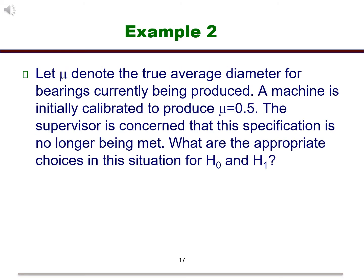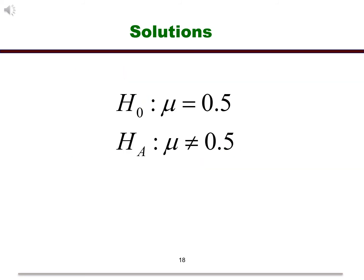Here is an example for setting up the hypotheses. The supervisor is concerned that the specification is no longer being met. The spec here is equality. Let's set up the null and alternatives for this case. Recall that the null is always equality. We should go to the problem statement to get the alternative. Since the spec is looking for equality, the alternative in this case would be the inequality.